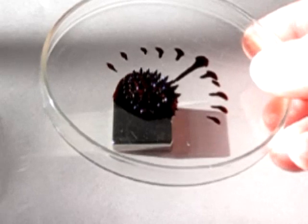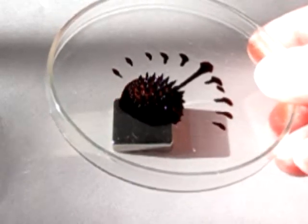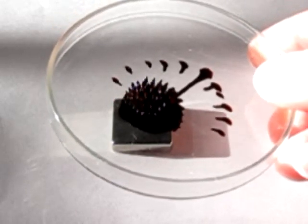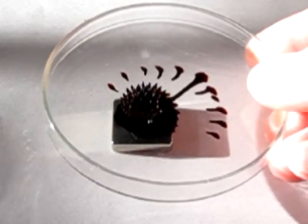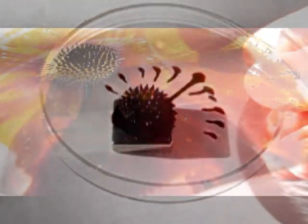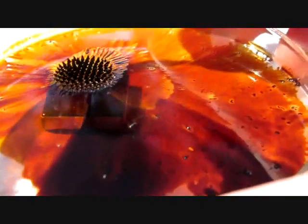So here you can see how the ferrofluid gets dragged along towards the magnet. Slow motion doesn't really work all that well, so let's rather look at it in normal speed again.